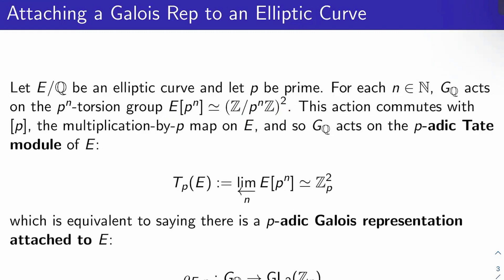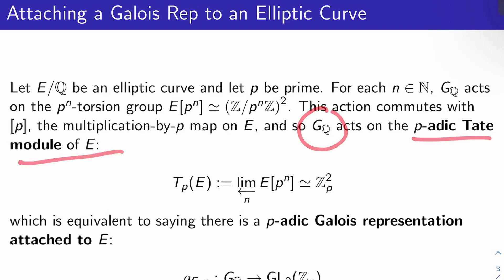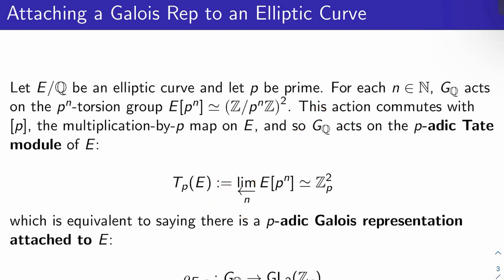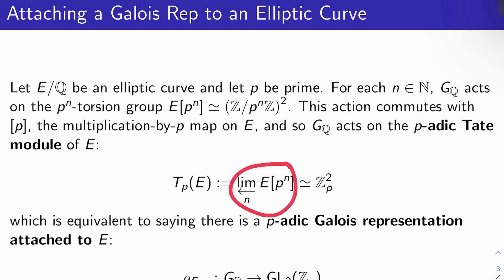This action is easily seen to commute with multiplication by P. E is a group, so multiplication by P on E makes sense. In other words, G_Q acts on what we call the P-adic Tate module of E, written T_P(E). By definition, that's the inverse limit over N of the P-to-the-N torsion of E. Since each P^N torsion is isomorphic to (Z/P^N Z)^2, taking the inverse limit gives Z_P^2, the P-adic integers squared.